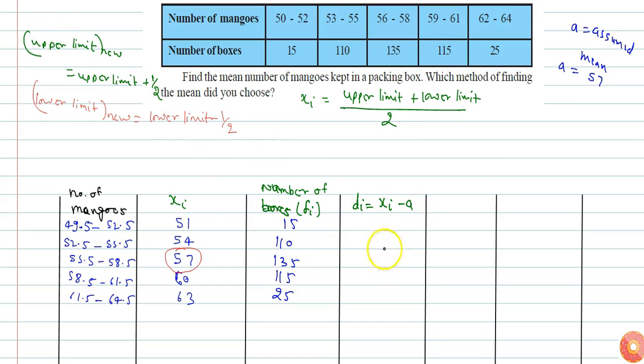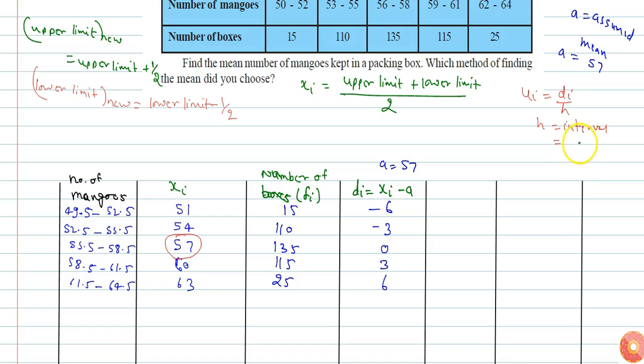51 minus 57, value of a is 57, so 51 minus 57 is minus 6, here minus 3, and here 0, 3, and 6. And now I need to calculate ui. Ui is given by di by h, where h is the interval or it can be said as class size.